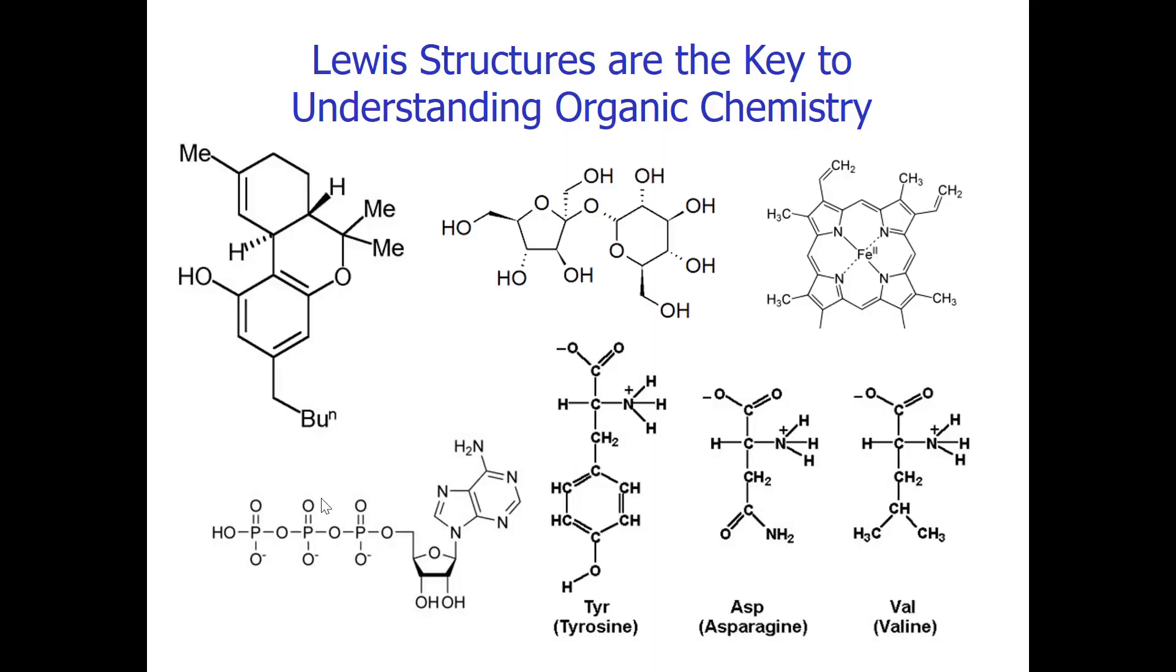Lewis structures are key to understanding organic chemistry. Here is a disaccharide that you likely have in your system known as glucose. Here is one of the DNA bases. Here are some amino acids that are part of your protein. Here is the heme structure in hemoglobin in your red blood cells. So you're full of organic molecules.